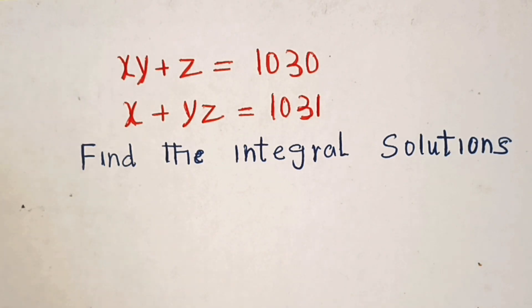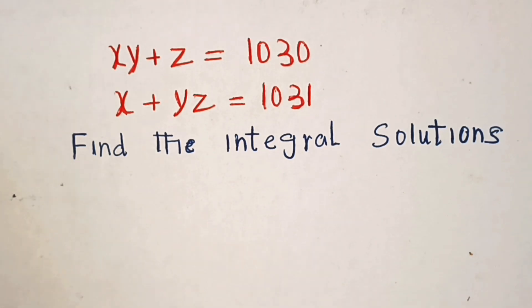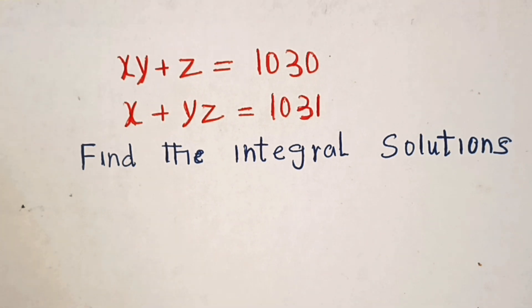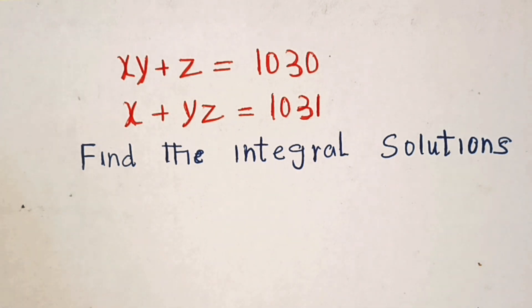Hi dear friends. We have here a system of equations in three variables x, y, and z. The equations are: x times y plus z is equal to 1030, and x plus y times z is equal to 1031. So we'll find out how many integral solutions these equations have.